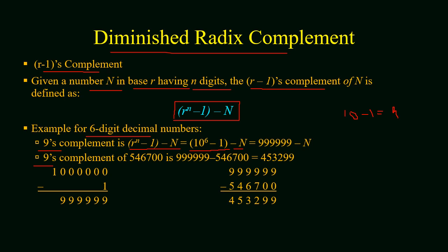Let we have a number 546700 and we wish to find its 9's complement. That will be (10^6 - 1) - 546700. Subtracting 10^6 - 1 gives us 999999, and then subtracting 546700 gives us a result of 453299.